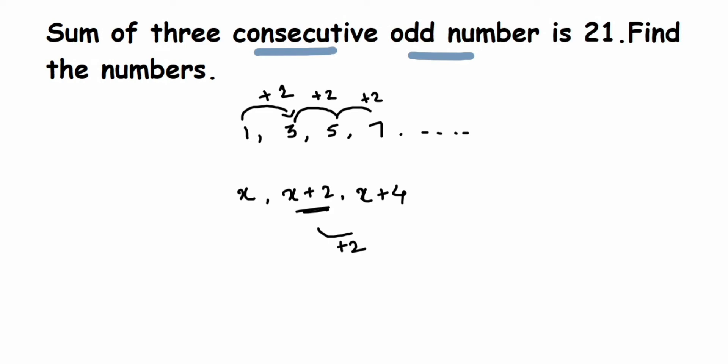We got the odd numbers, let's start solving this. Here's the solution: let three consecutive odd numbers be... It's very important to understand how we got this.